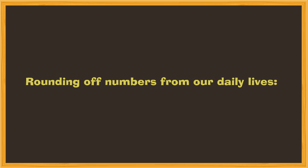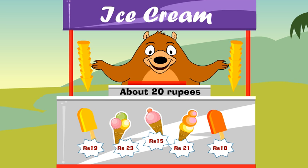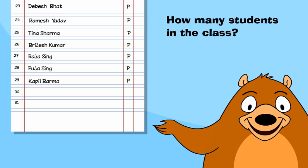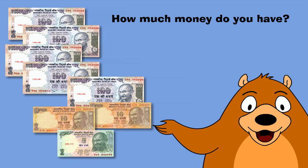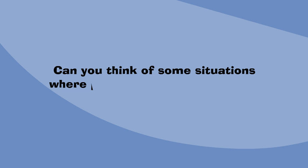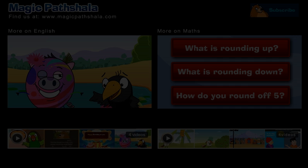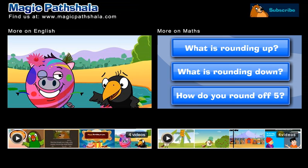Let's see some examples of rounding off from our daily lives. How much does the ice cream cost? About 20 rupees. 30 rupees. How many students in the class? Nearly 30 students. How much money do you have? 500 rupees approximately. Can you think of some situations where people round off numbers? Send us your ideas in the comments box. There's a bit more to learn about rounding off — check out the link.